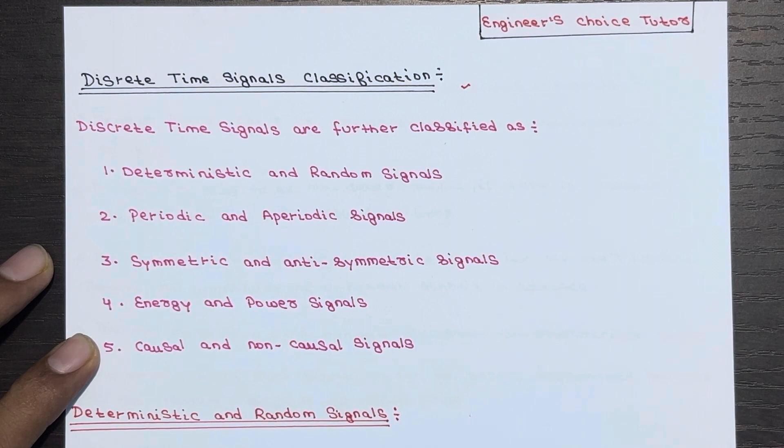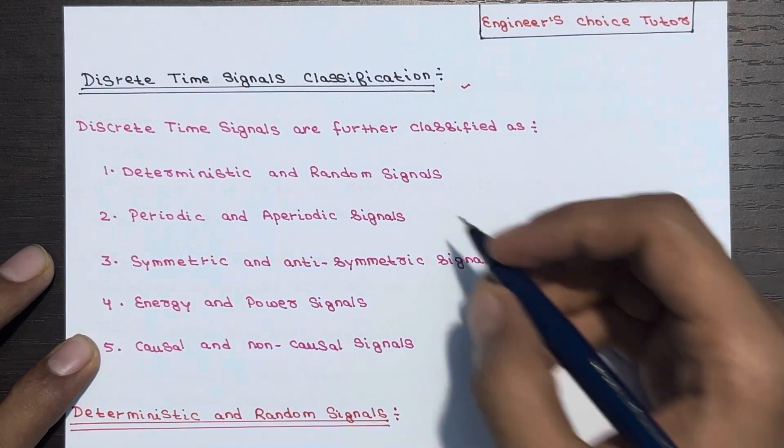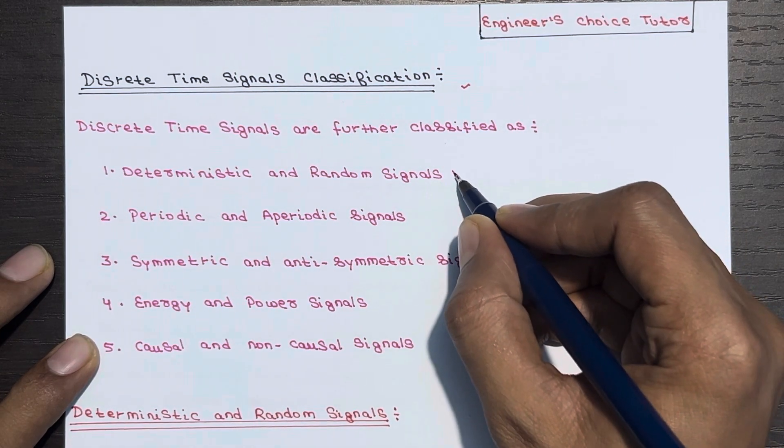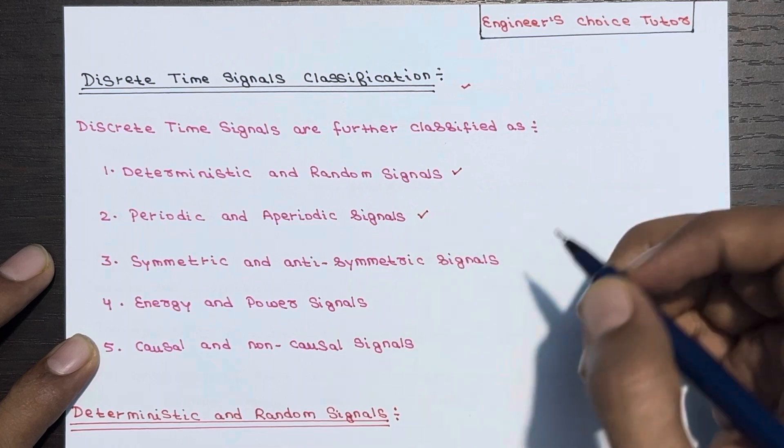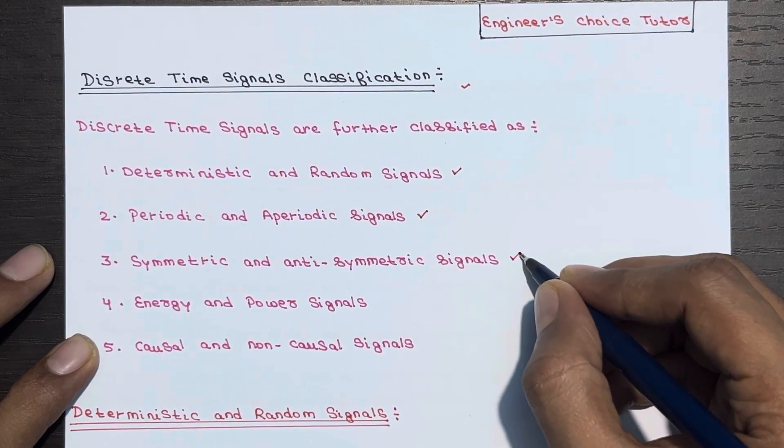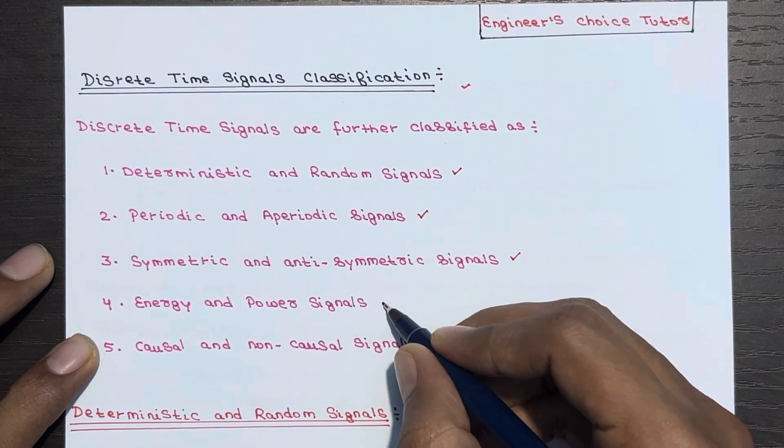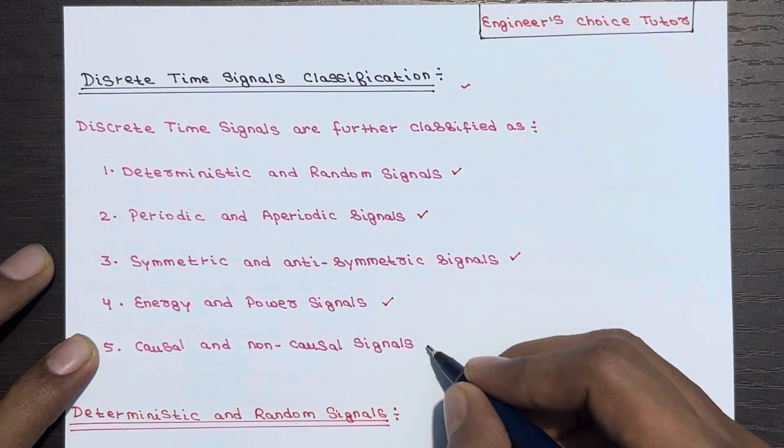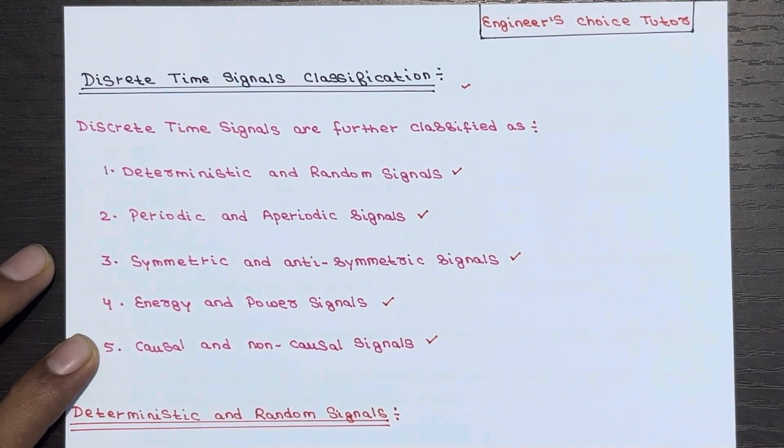There are several ways to classify them including deterministic and random signals, periodic and aperiodic signals, symmetric and anti-symmetric signals, energy and power signals, causal and non-causal signals.